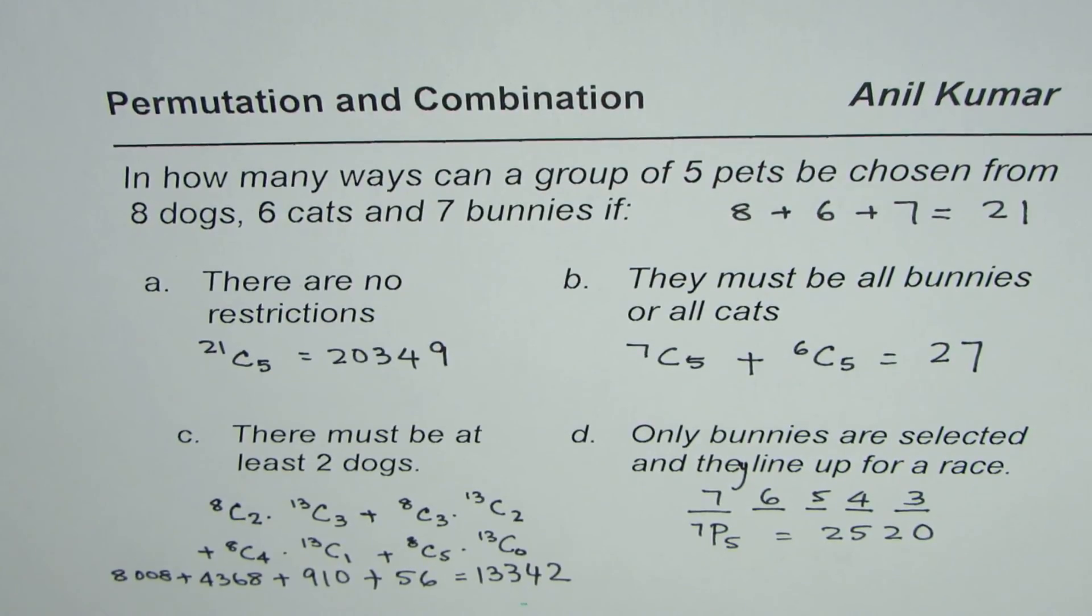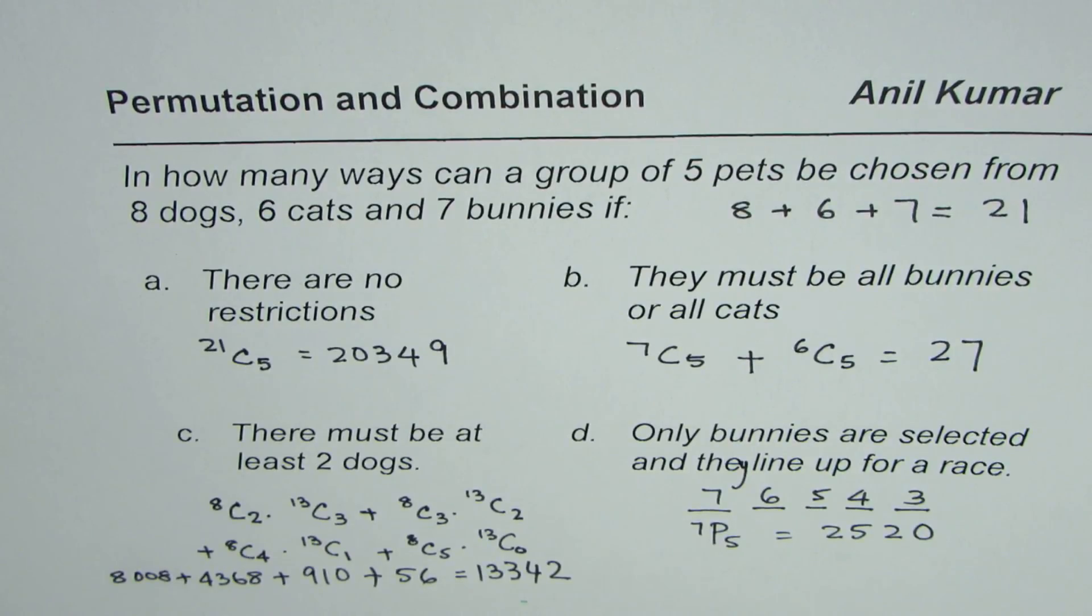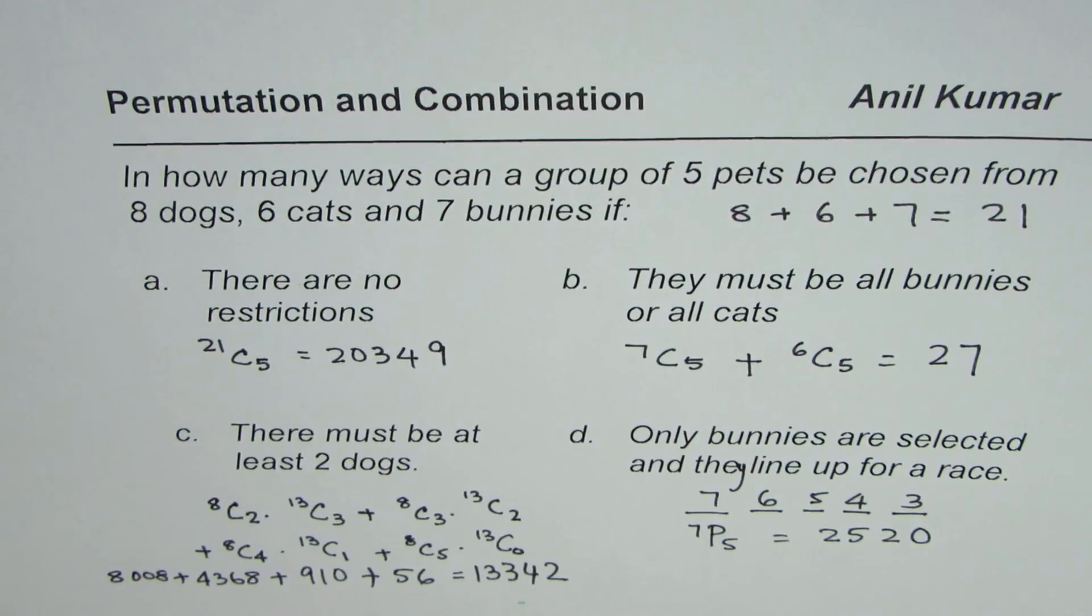In previous three examples, we used combination since the group which is selected, the order does not matter in that particular group. I hope with this, you have understood how to use permutation and combination to solve such questions. Thank you and all the best.